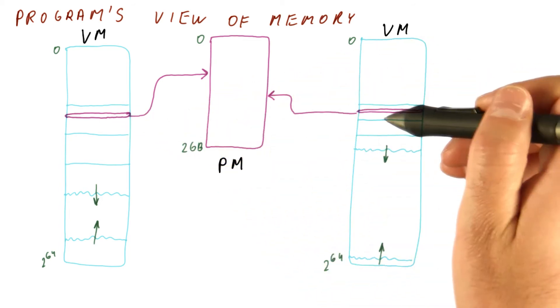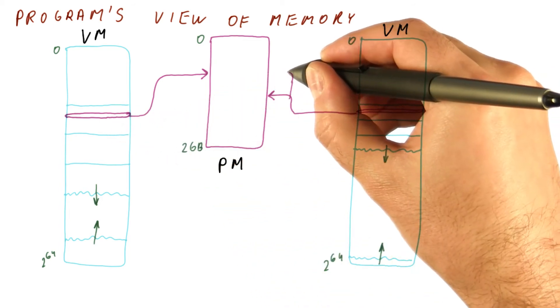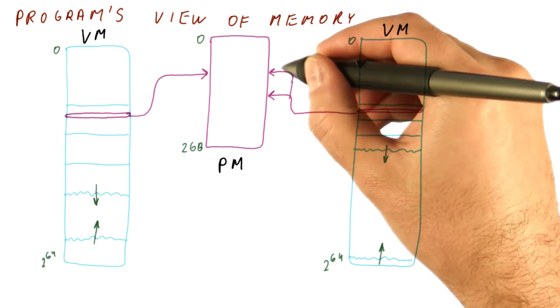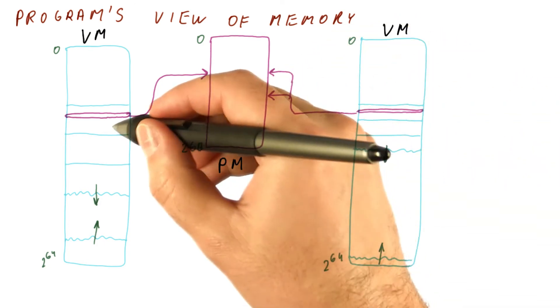For example, when these programs have nothing to do with each other, it might go to the same place in the physical memory. For example, if these programs are sharing data.